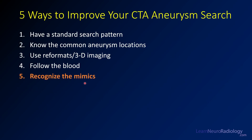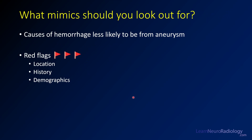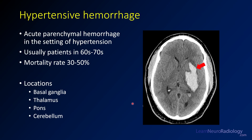Tip number five: recognize the mimics. There will be times when a patient has hemorrhage that's not likely to be aneurysmal subarachnoid hemorrhage. Recognizing these improves your specificity so you don't overcall a small outpouching or infundibulum as an aneurysm. The red flags are atypical location, unusual history, and atypical patient demographics. One mimic is hypertensive hemorrhage — usually acute onset, predominantly parenchymal, in older patients with hypertension, in common locations like the basal ganglia, thalamus, pons, or posterior fossa. A parenchymal hemorrhage in those locations is unlikely to be from an aneurysm.